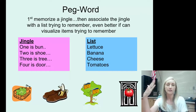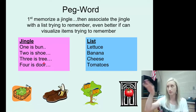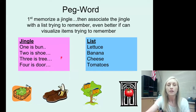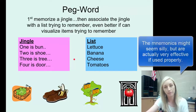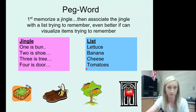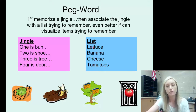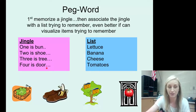The peg word method requires you to first memorize the jingle on the left here: one is bun, two is shoe, three is tree, four is door, five is hive, six is sticks, seven is heaven, and so on. Then you associate that jingle with the list you're trying to remember — even better if you can visualize the items. Let's say it's a grocery list: lettuce, banana, cheese, tomato. You'll visualize each item paired with each line in the jingle.